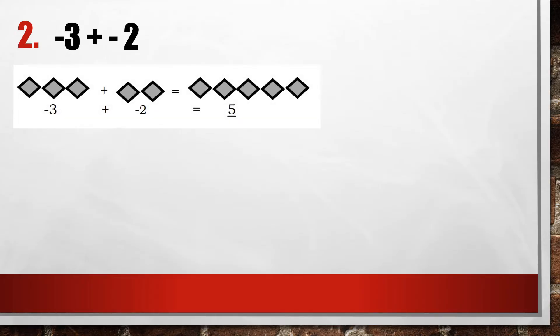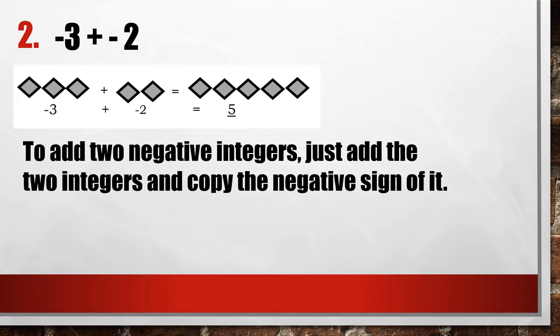Example 2: negative 3 plus negative 2. By representation using algebra tiles, we have 3 colored tiles for negative 3, plus another 2 colored tiles for negative 2. Adding them gives 5 colored tiles. To add two negative integers, just add the two integers and copy the negative sign. So negative 3 plus negative 2 is equal to negative 5.